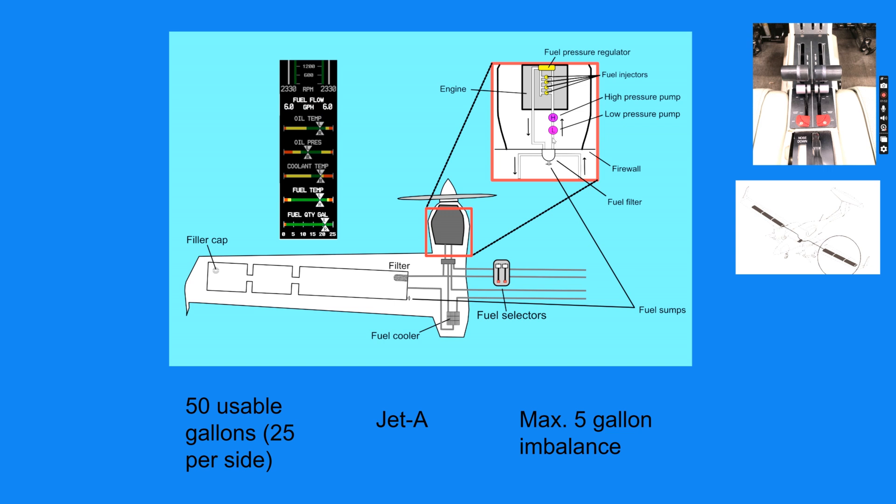In the case of the TAE-125 engines, we have two mechanically engine-driven pumps that supply high-pressure fuel. There's a low-pressure pump and a high-pressure pump. The engine has a fuel pressure regulator controlled by the electronic control unit for the engine. That regulates the fuel pressure.